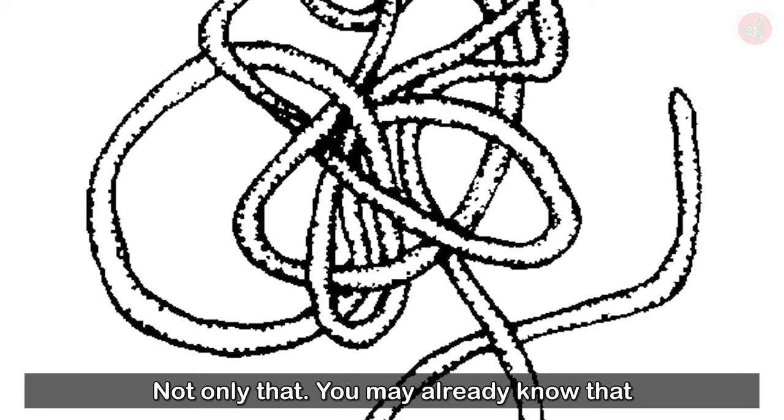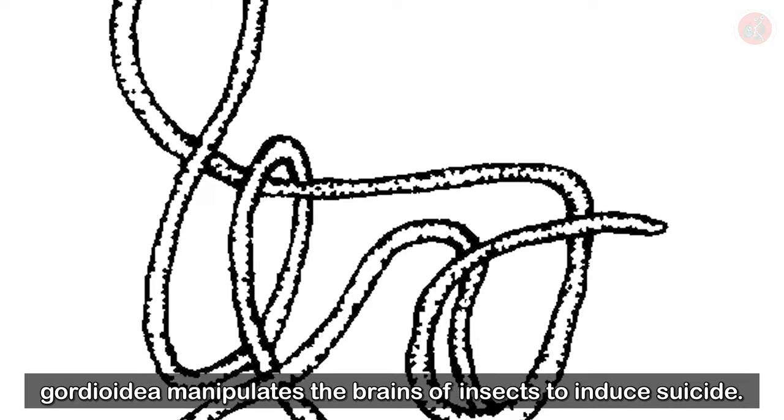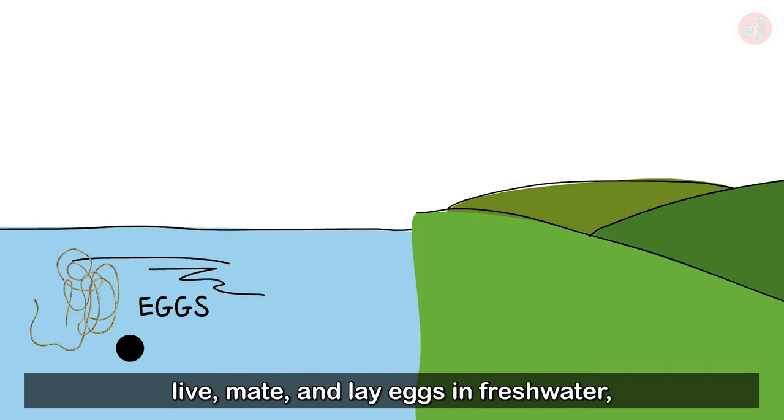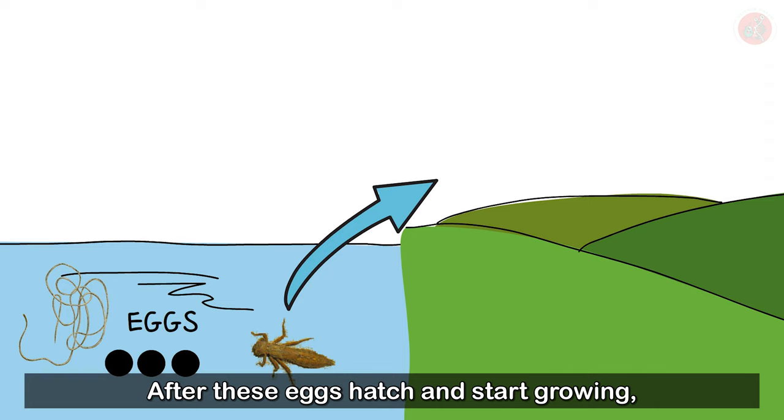Not only that, you may already know that Gordioidea manipulates the brains of insects to induce suicide. The adult larvae of Gordioidea live, mate, and lay eggs in fresh water, which are then eaten by dragonflies and mosquito larvae. After these eggs hatch and start growing, the adult dragonflies and mosquitoes are eaten by carnivorous insects such as mantises and crickets.